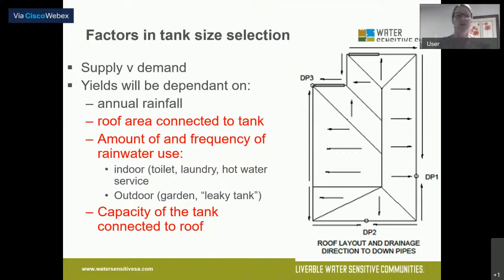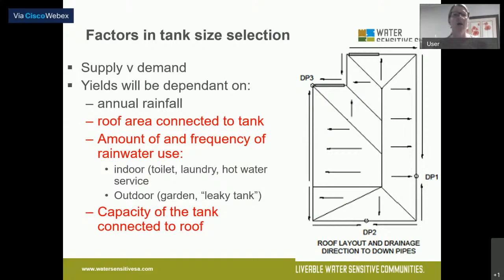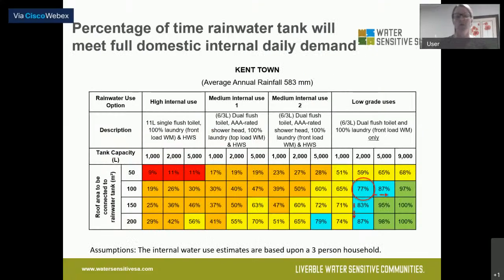Tank size also affects yield. A 3,000 litre tank will spill occasionally; a 5,000 litre tank will spill less frequently — fill and spill. But there's a sweet spot and bigger isn't always better. We want to connect as many downpipes as we can, but finding that sweet spot is the challenge. I'll take you through a table we've developed to help you find that sweet spot.